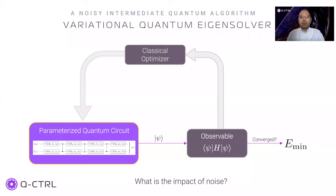Let us discuss the very popular variational quantum eigensolver, or the VQE algorithm, which has been used to find the ground state energy of small molecules, solve small condensed matter problems, etc. It is a prototypical NISQ era hybrid quantum-classical algorithm. A quantum computer prepares a parameterized quantum state called an ansatz, and a classical optimizer optimizes a cost function generated from the quantum state. Starting from a random or heuristic-based set of parameters, the classical optimizer searches the parameter space using this hybrid classical-quantum loop. The calculation stops when the cost function converges to an optimal value.